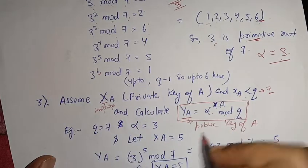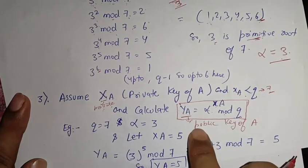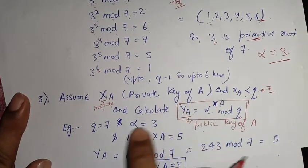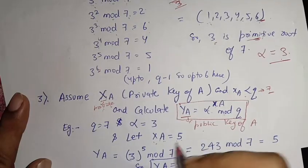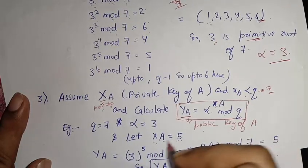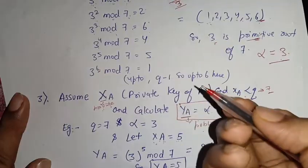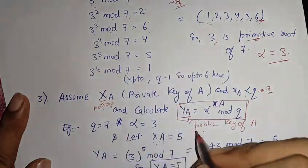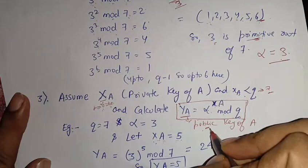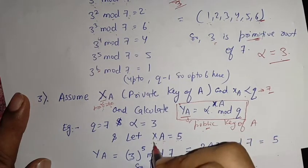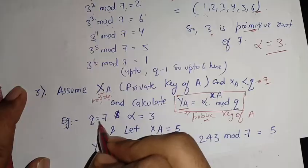Sometimes in a question, XA or YA will already be provided, so you don't need to assume them. If the question states your private key is 5 or 4, just use that value and calculate YA. If neither is given, assume the private key yourself and solve for the public key.